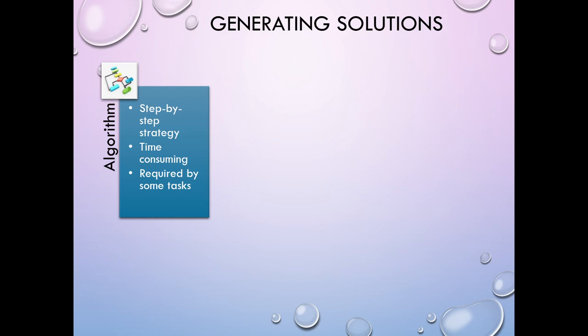Math is a good example of an algorithmic process, and computer programming is a great example of an algorithmic solution. In math they call some things algorithms; in computer programming they sometimes call the code an algorithm. These are step-by-step strategies and they are not necessarily our go-to strategy for solving problems. If we can use one of the other solution-generating techniques, we'll usually try them first because of that time-consuming component.